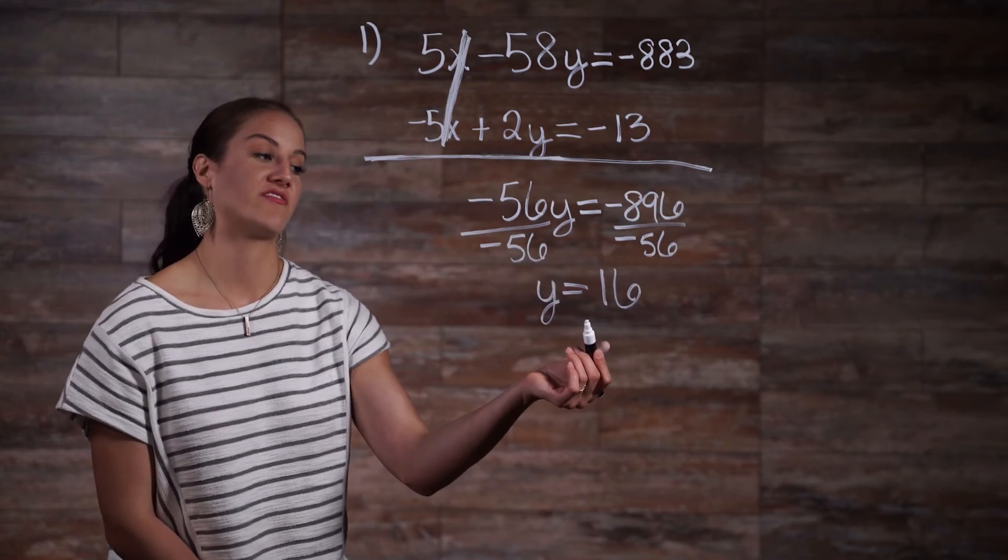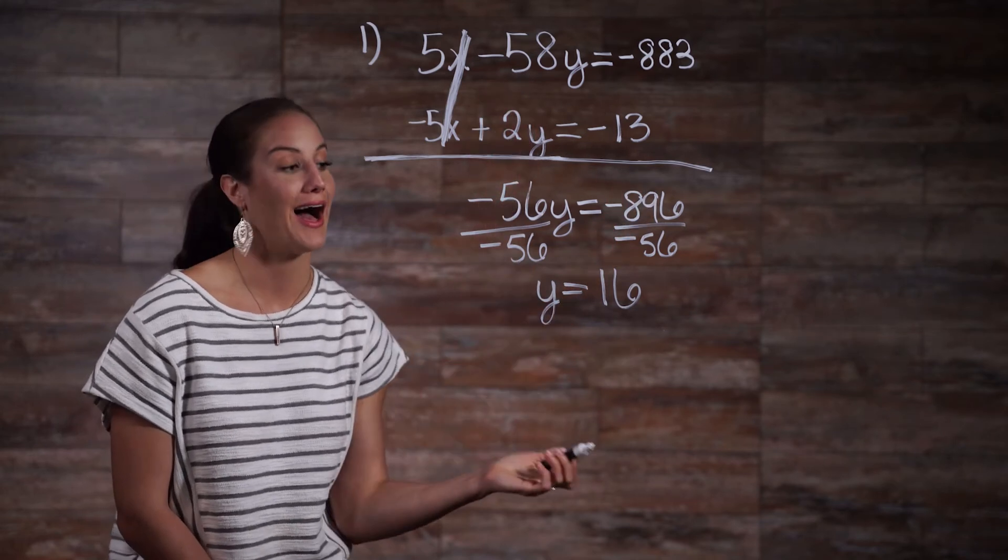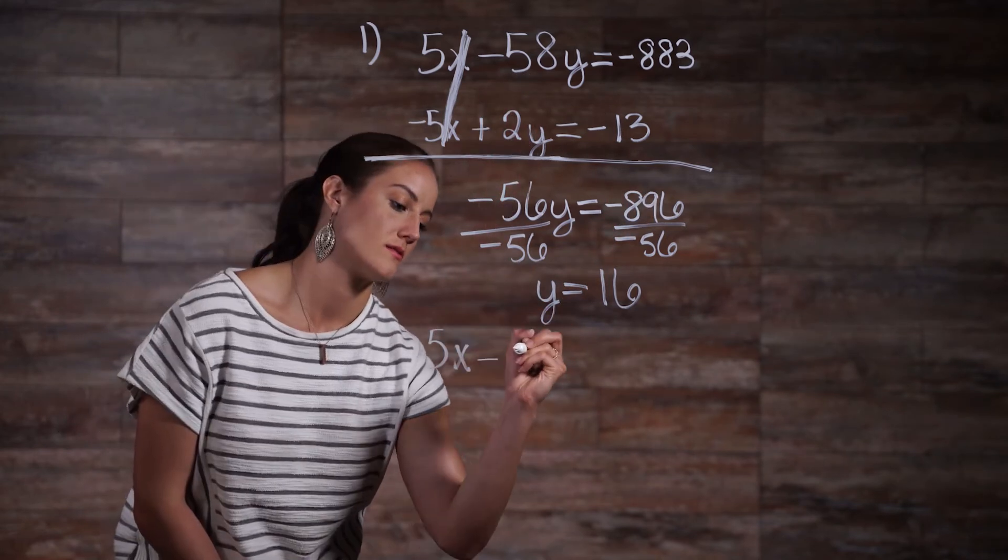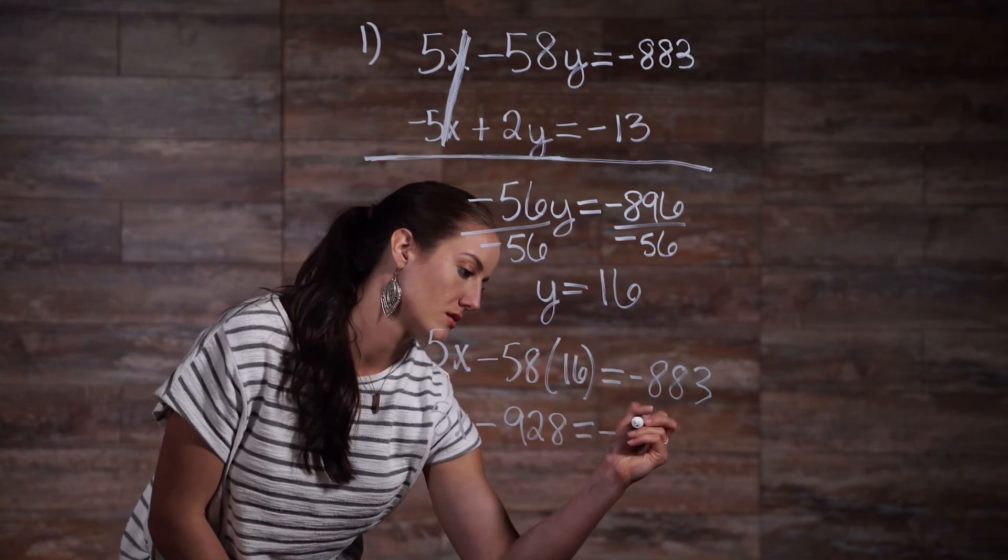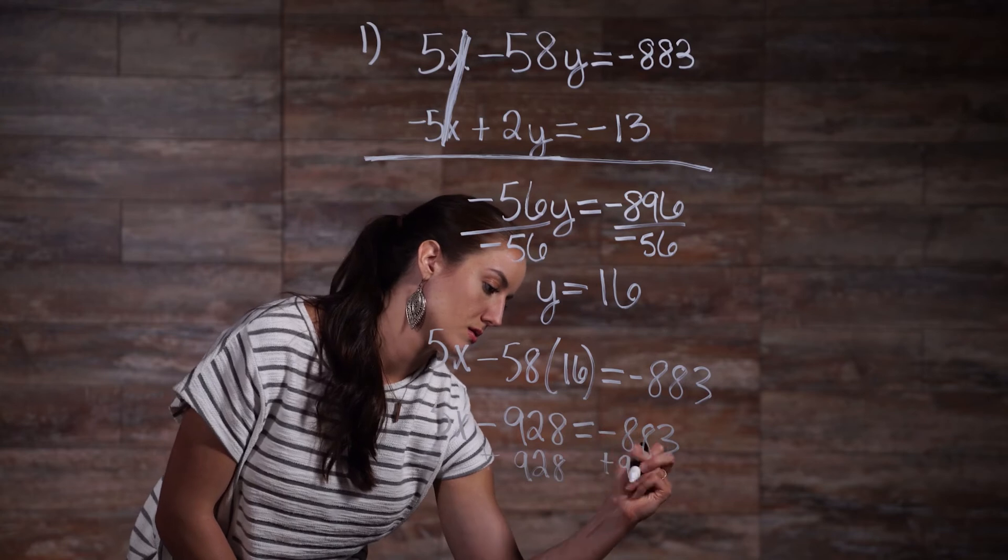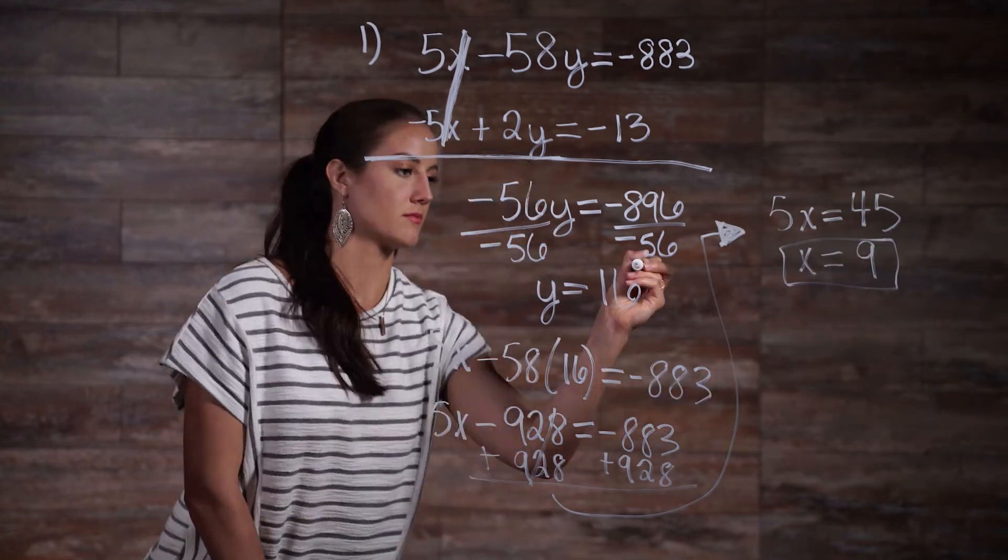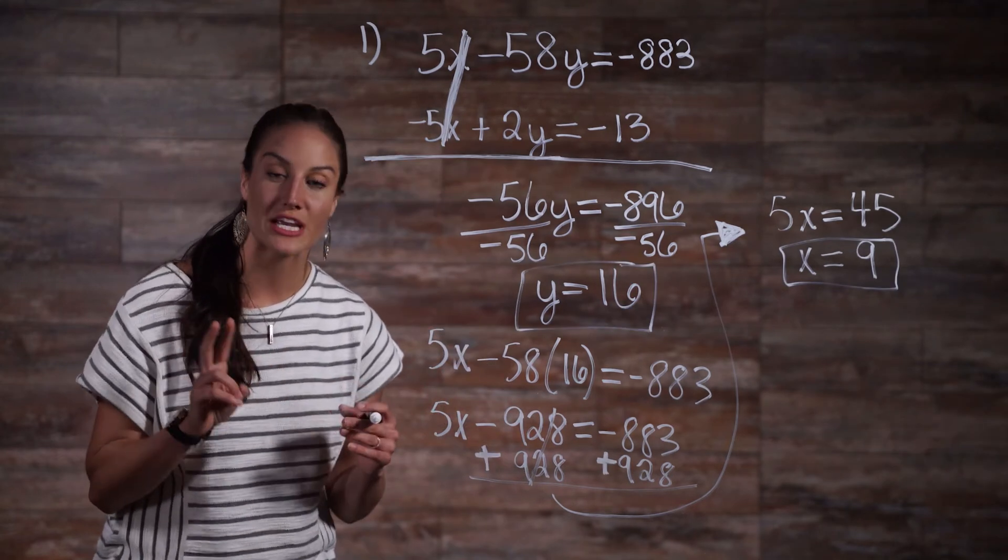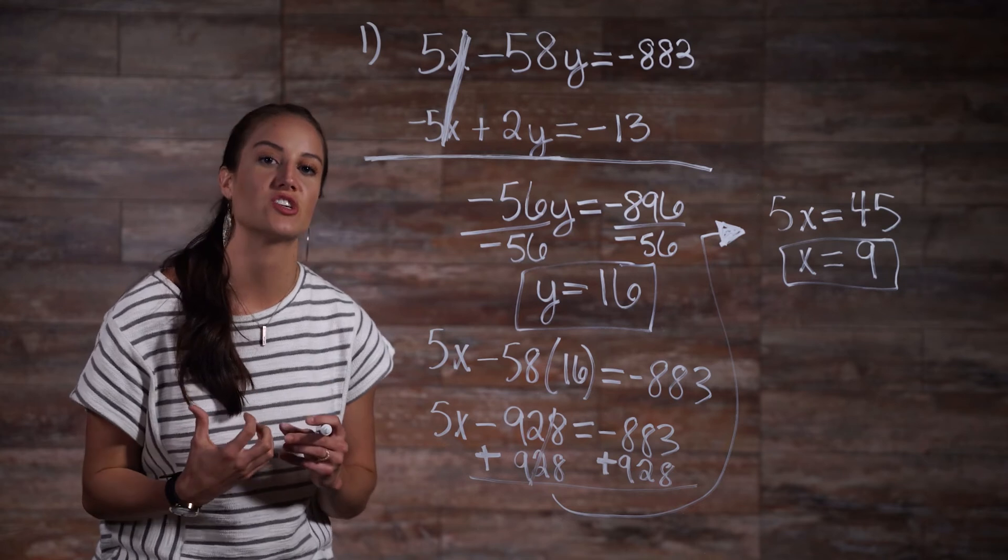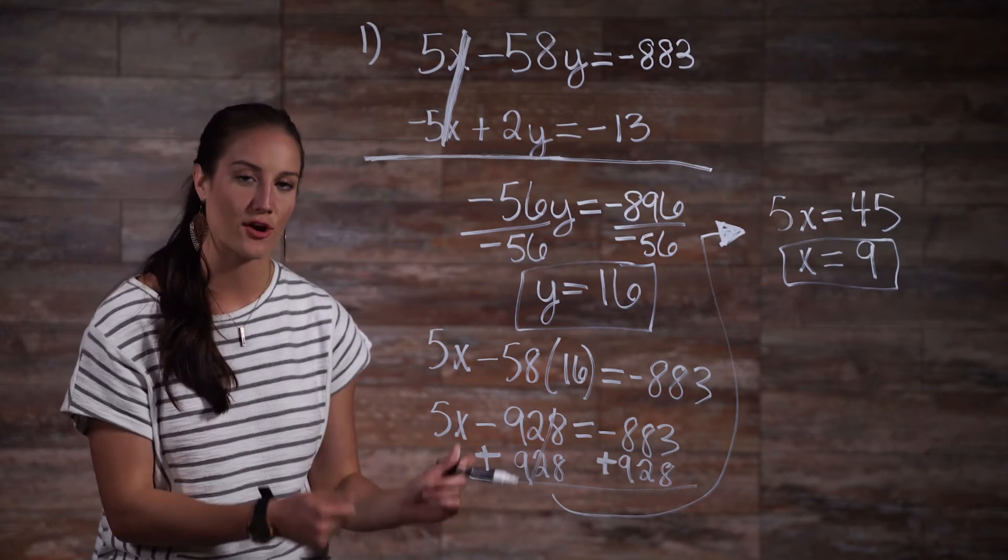Now, we plug our y variable back into one of our original equations to solve for x. I'll plug it into the first. Great, so we've solved this system using elimination, because our same two variables had the same coefficient, or they shared the same but negative coefficient, like in our case.